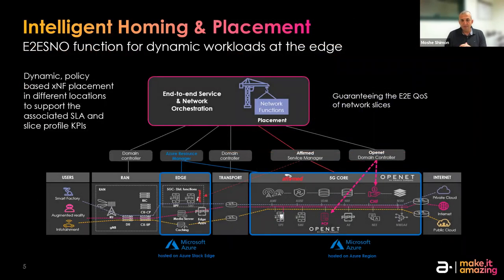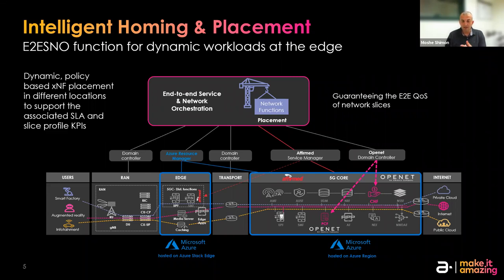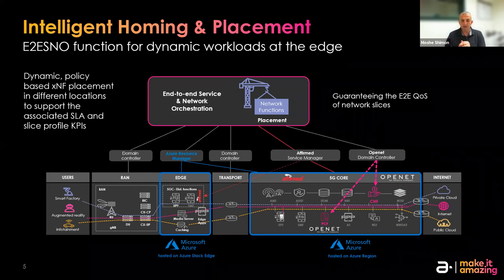Even before instantiating and managing the lifecycle of the slice, we need to build the network functions - for example the radio or UPF. In 5G standalone, the orchestration needs the intelligence to decide where to place the function, because it's not static as in 4G. I need to understand if there's a change in the underlay, maybe insufficient bandwidth in transport or radio performance degradation, and potentially move a user plane function or application to another location.